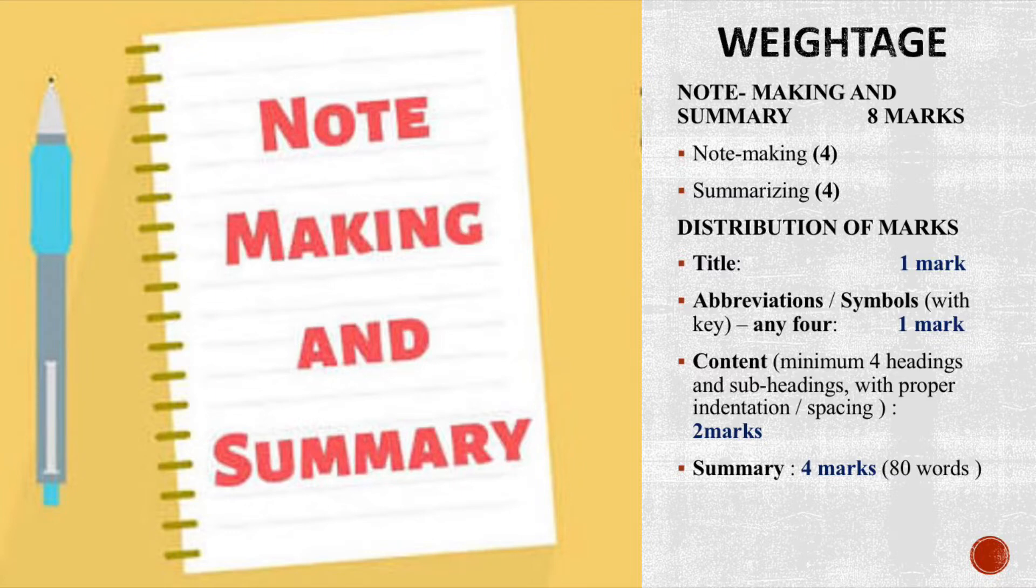Summary carries four marks. Summary is basically the condensed version of the passage, so the word limit of summary should be 80 to 100 words, that is about one-third of the passage.